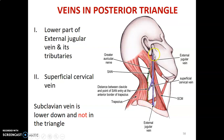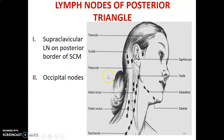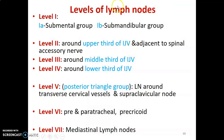The lymph nodes of the posterior triangle include supraclavicular lymph nodes within the supraclavicular triangle and occipital lymph nodes around the occiput. Clinically, the lymph nodes of the neck are divided based on levels.